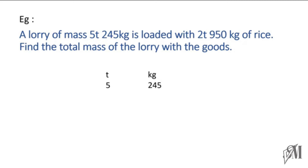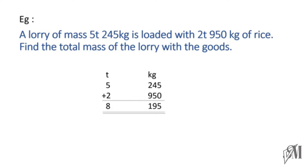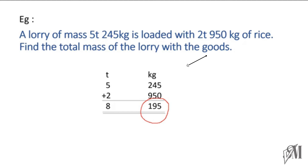We are going to add two masses like this. Now remember, this is very simple addition — the normal method of addition. All you have to remember is the value that lies in the kilogram column can be less than 999. If it is 1000 kilograms, you should take it to the tons column as one ton. You can have only 999 kilograms in the kilogram column — that's all.